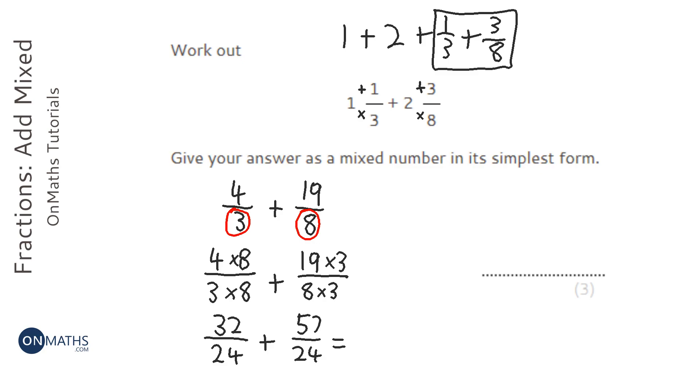Now what I'm going to do here is add the tops together and keep the bottom the same. So 30 plus 50 is 80, 2 plus 7 is 9, so it's 89 over 24.